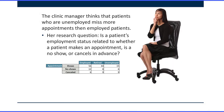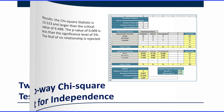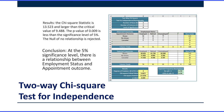She also thinks that patients who are unemployed miss more appointments than employed patients. She wants to know if a patient's employment status is related to whether a patient makes an appointment, is a no-show, or cancels in advance. She can use a two-way Chi-square test for independence with these data. She runs that test and determines at the five percent significance level there is a relationship between employment status and appointment outcome.